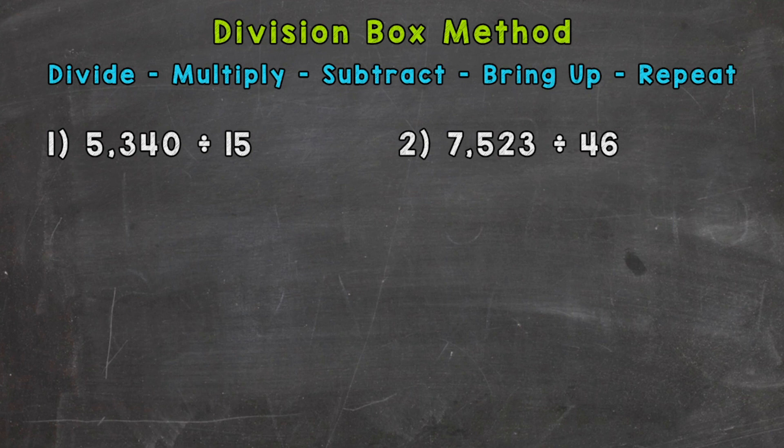This method can help stay organized throughout the whole process, and it's going to help keep columns lined up. In this specific video, I'm going to be dividing four-digit numbers by two-digit numbers. So let's jump into number one, where we have 5,340 divided by 15.